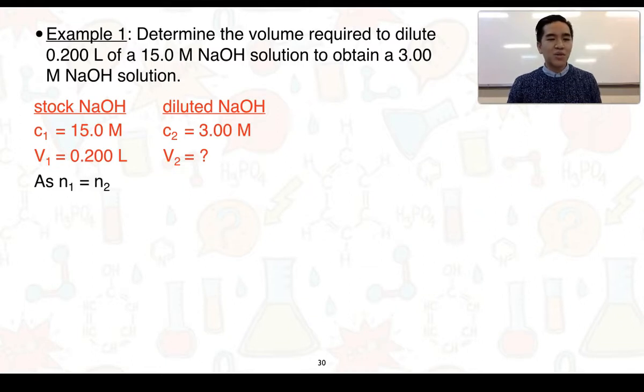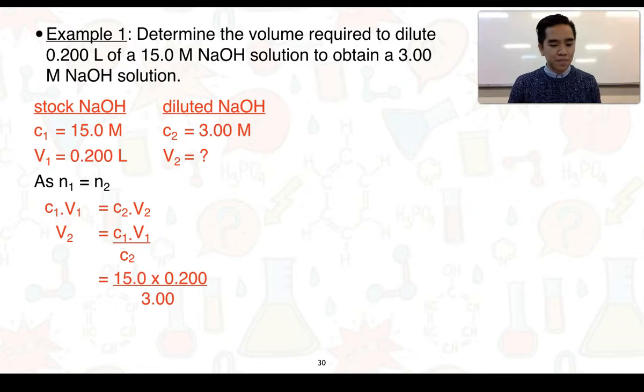Because the number of moles in our stock and diluted solution are going to be the same, we can use the formula c1V1 = c2V2. We're going to rearrange this to solve for V2. So V2 = c1 × V1 ÷ c2. We've got all of these values so we just need to substitute them in. 15.0 × 0.2 ÷ 3 and we get an answer of 1.00 litres.